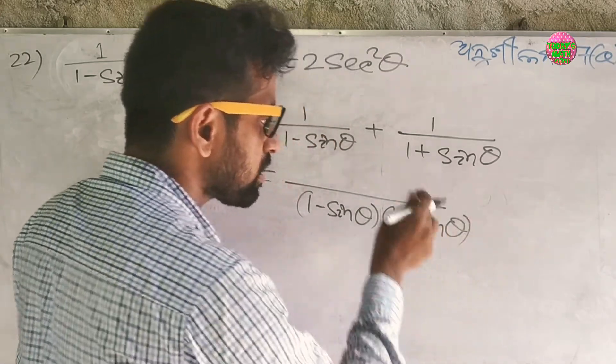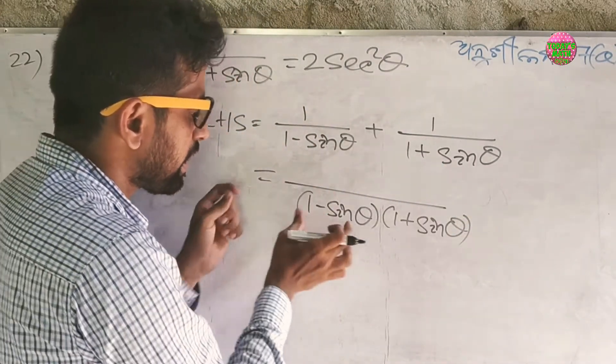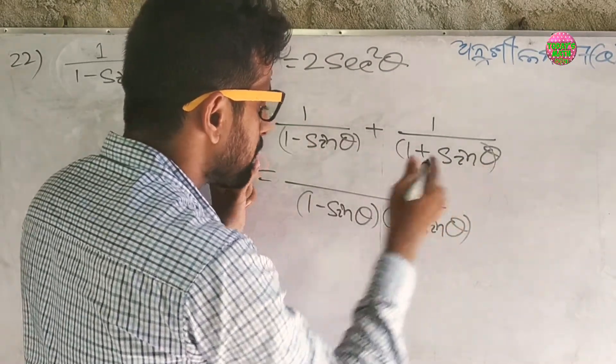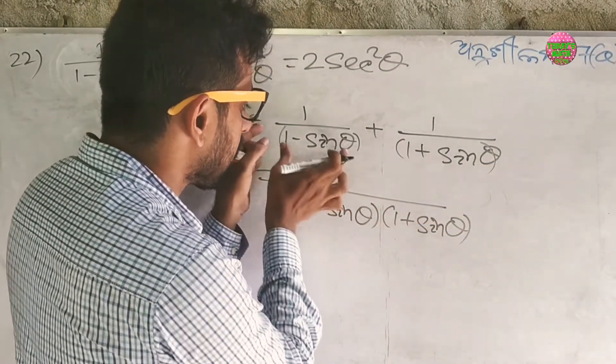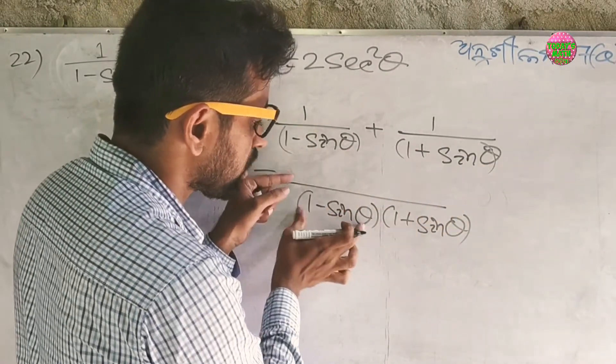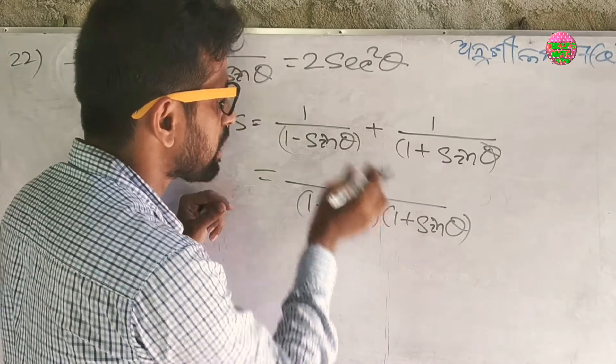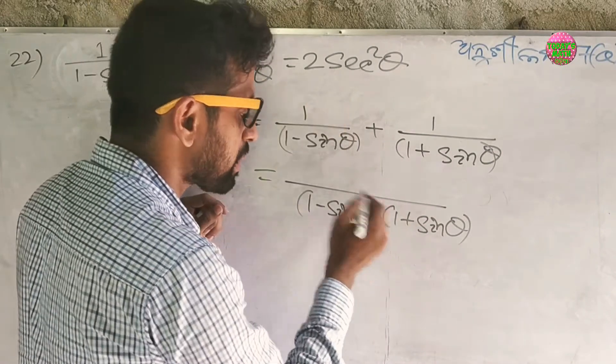LHS is: numerator is (1 plus sin theta) plus (1 minus sin theta), which equals 2.